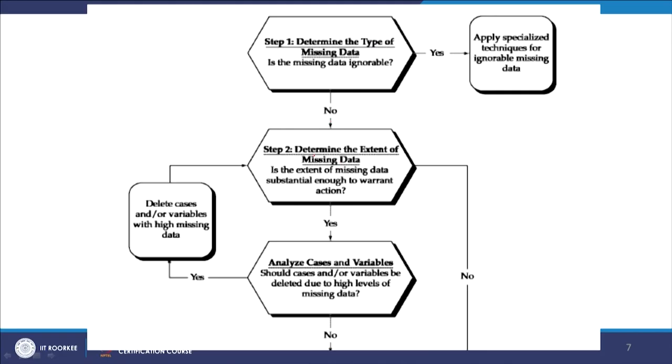If it is not ignorable - if it is a sufficiently large problem - then go to the second step: determine the extent of the missing data. Is the extent large enough to warrant action? For example, a burning sensation for just one day may be ignorable, but if it occurs 15 or 20 days out of 30 it could lead to an ulcer. You need to use your own logic to assess the threshold.